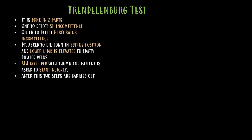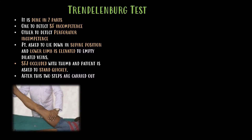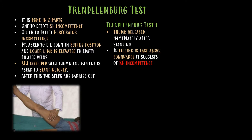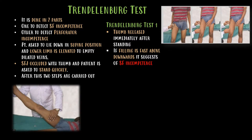The Trendelenburg test is an important test in the diagnosis of varicose veins, done in two parts: one to detect saphenofemoral incompetence and the other to detect perforator incompetence. The patient is asked to lie in supine position and the lower limb is elevated to empty the dilated veins. The saphenofemoral junction is occluded with the thumb and the patient is asked to stand quickly. In Trendelenburg test one, the thumb is released immediately after standing.